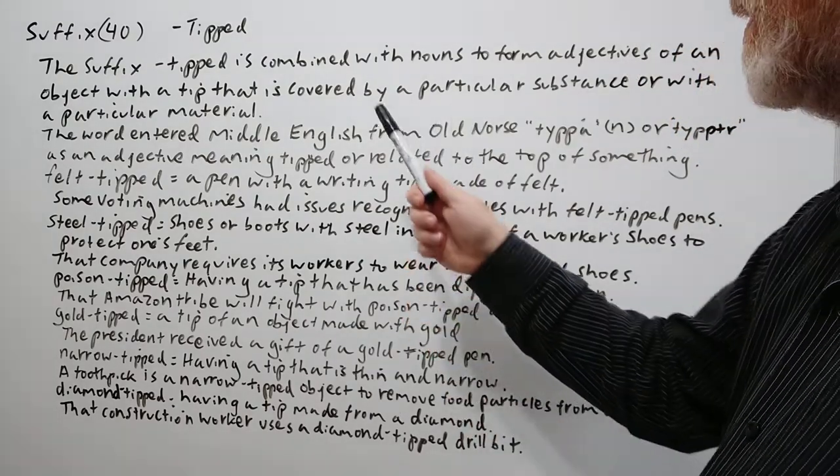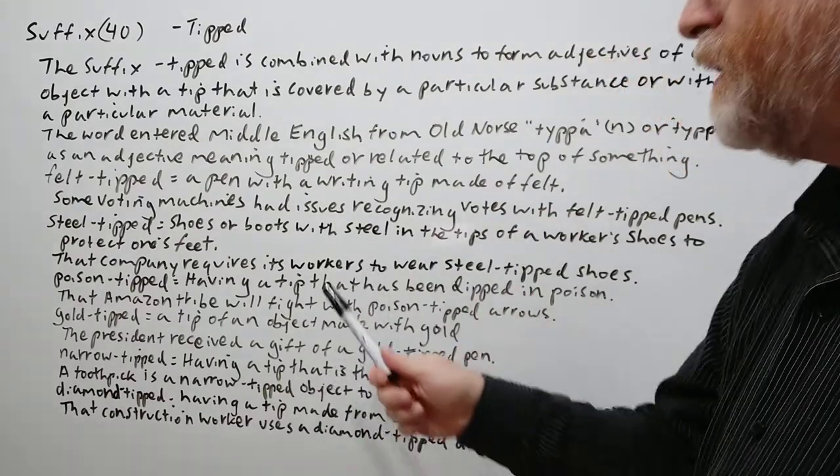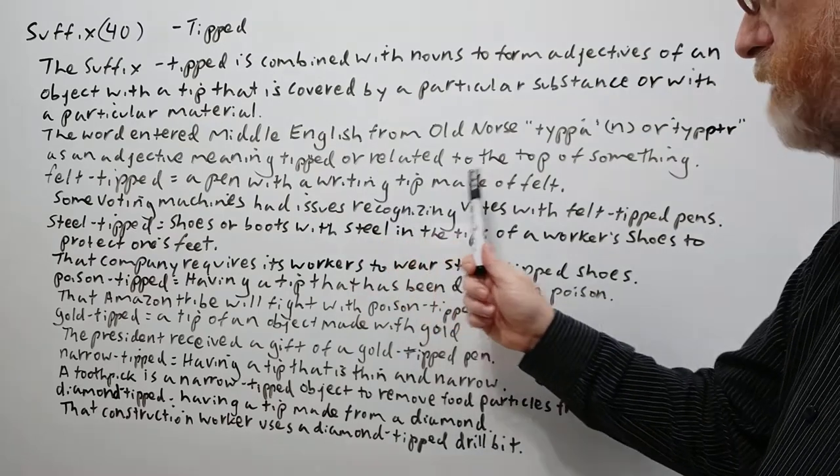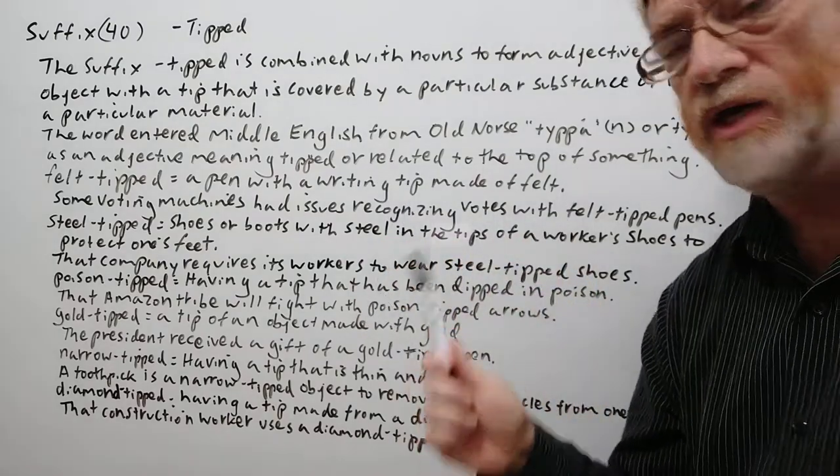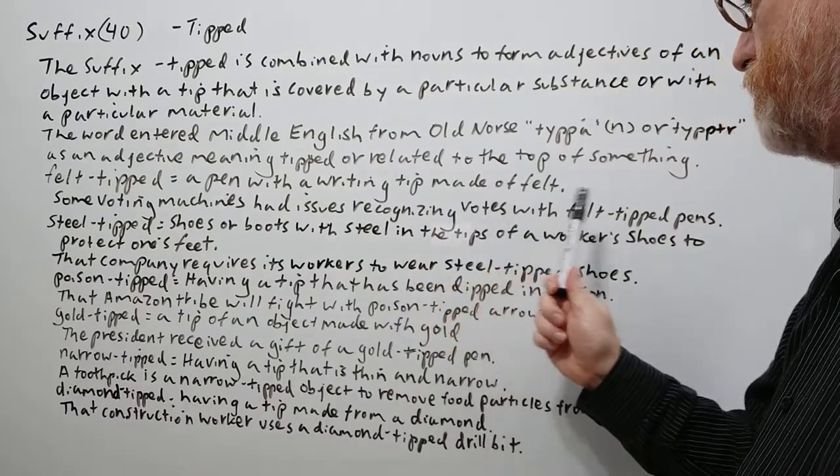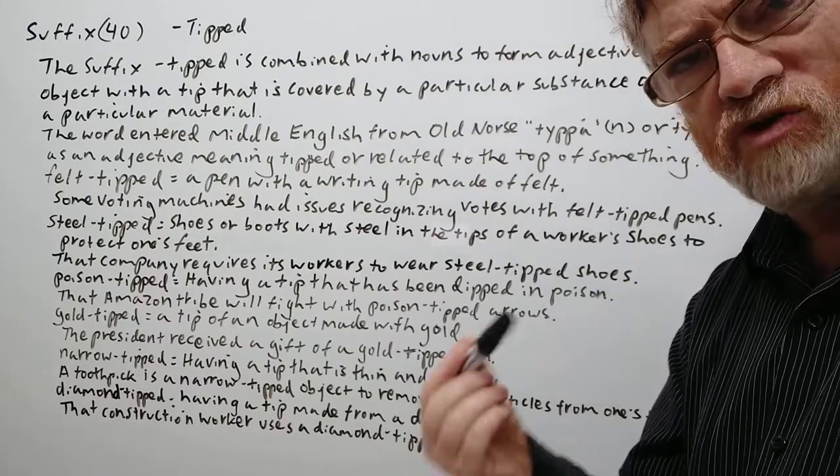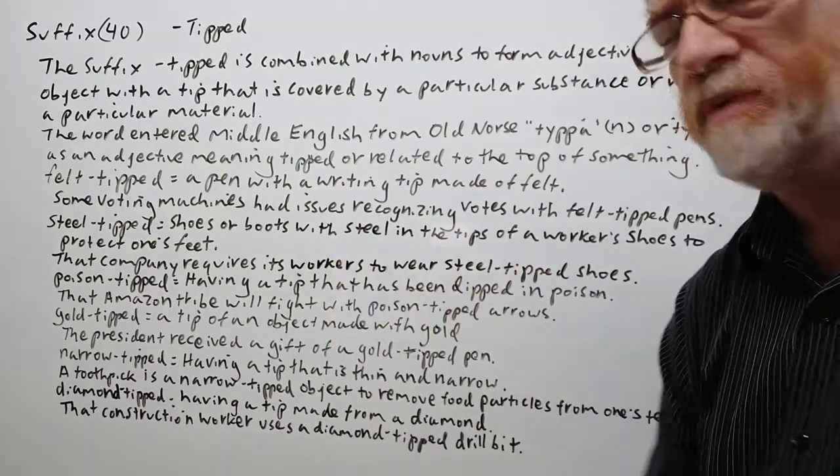We've got several examples to show just how it's used. Here's the first one: felt tipped, a pen with a writing tip made of felt. Some voting machines had issues recognizing votes with felt tip pens. The voting machine had trouble picking it up if you use this type of pen.